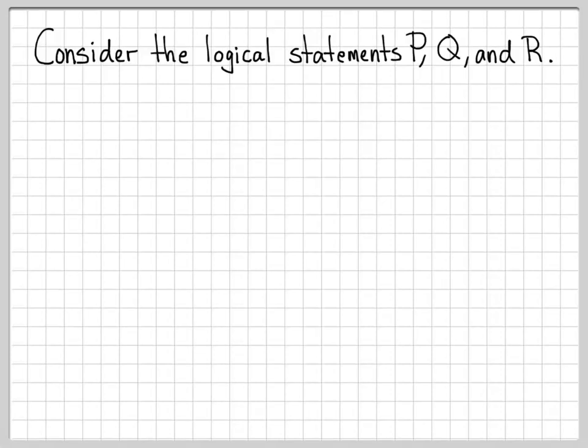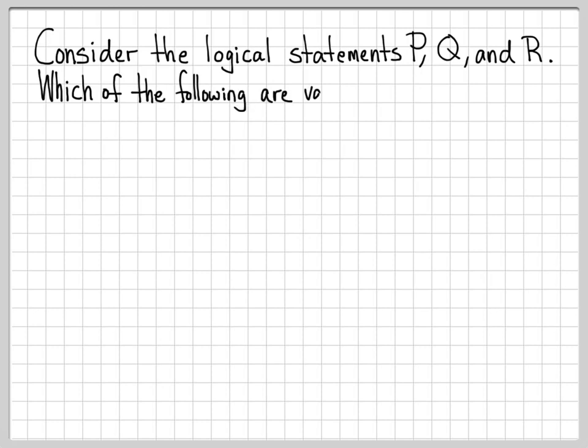In this problem, we're going to work with our logical symbols — the not symbol, the and symbol, and the or symbol — and we're going to use them with the logical statements P, Q, and R. Students generally do a good job writing logical statements using these symbols, but sometimes they write things that don't quite make sense. So we're going to work through a sequence of logical expressions and determine which are valid and which are invalid.